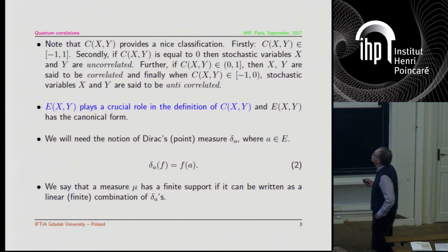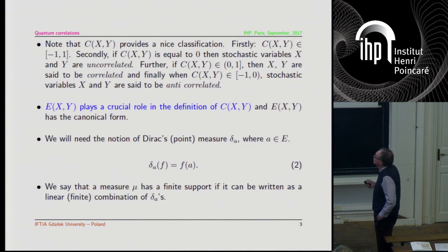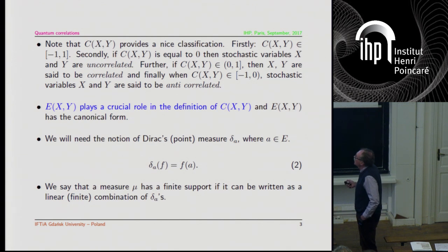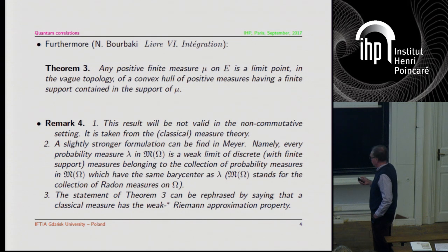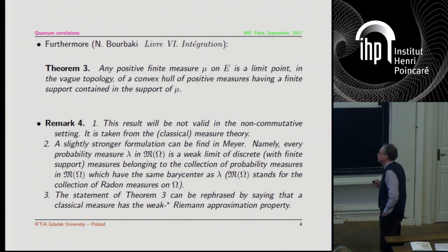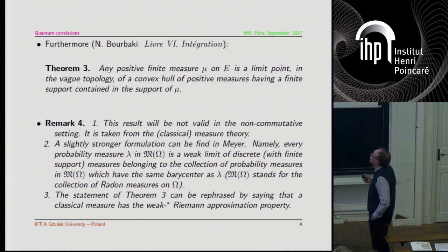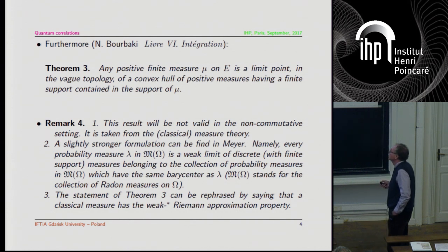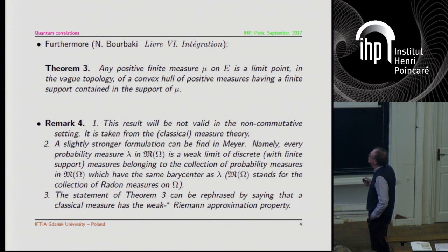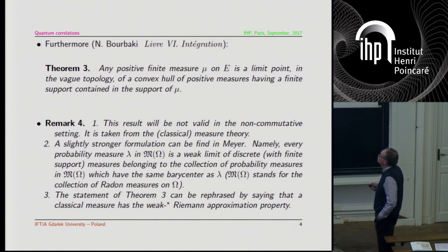Because this two-point correlation function plays such an important role, the natural question is: what is a canonical form of such a two-point correlation function? To answer this question — this is a simple observation — it is necessary to use Dirac point measures. That means a measure has finite support; it is just a combination of Dirac measures. But we have the following result: any probability measure can be nicely approximated by a positive measure having finite support. Following Bratteli and Robinson's terminology, we call this property the weak-star Riemann approximation property.